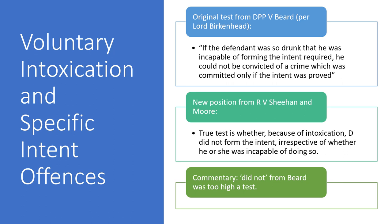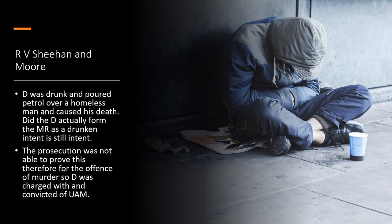For voluntary intoxication and specific intent offences: if the defendant was so drunk that he was incapable of forming the required intent, he could not be convicted of a crime which required that intent to be proved. That was the original test from DPP v Beard. The new position from Sheehan and Moore is that the true test is whether, because of intoxication, the defendant did not form the intent — irrespective of whether he was incapable of doing so.